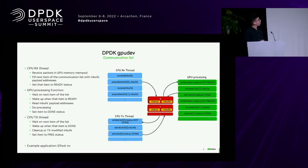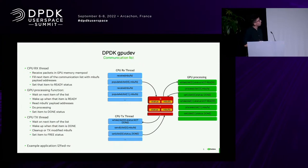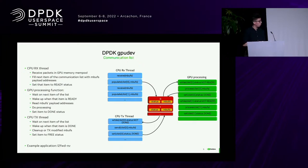The other most important feature is the communication list. This is a typical layout of an application that wants to offload packet processing to the GPU — specifically the L2Forward GPU application, but it's a common layout. The minimum requirement is two CPU threads: one dedicated to receiving packets and providing them to the GPU processing, and another thread dedicated to waiting for GPU processing completion, then cleaning up the MBUFs and finalizing the pipeline.